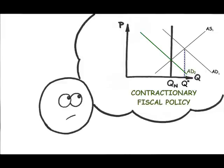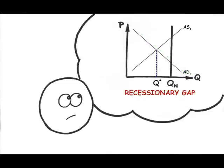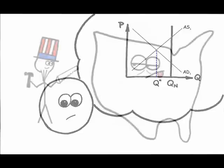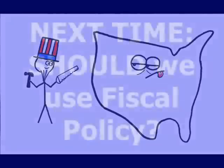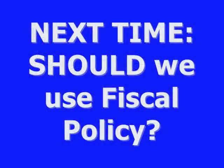A classical economist would probably ask, why not just wait for aggregate supply to move and allow it to correct the economy? If you do not believe that the economy will self-adjust, or even if you think that it may self-adjust but only over a very long time, then you probably prefer a more active, hands-on policy to help things along. Next time, should we use fiscal policy?